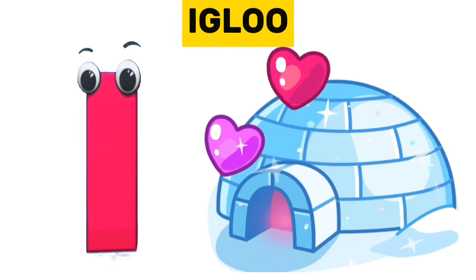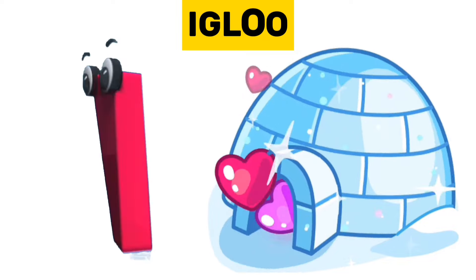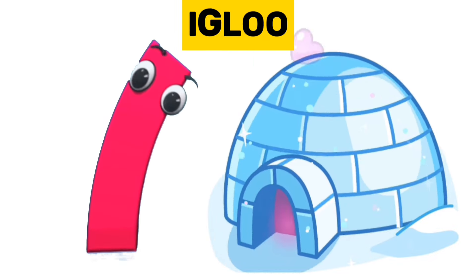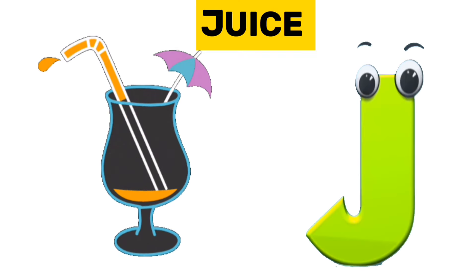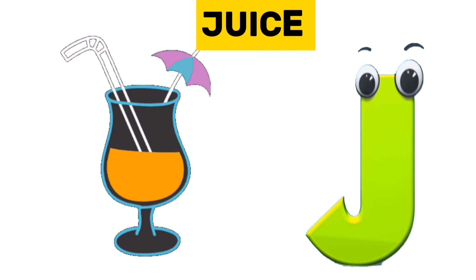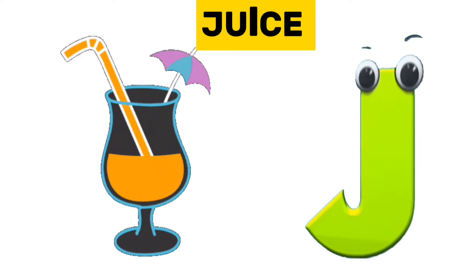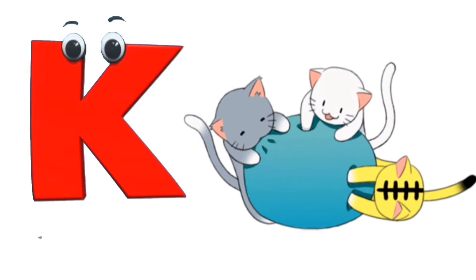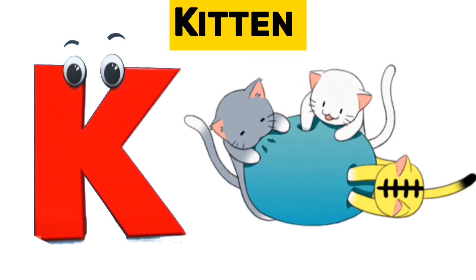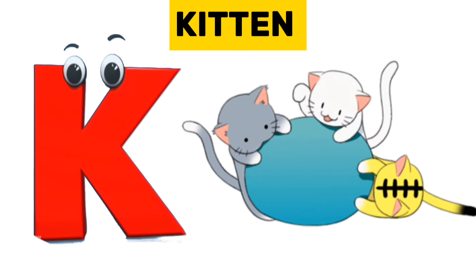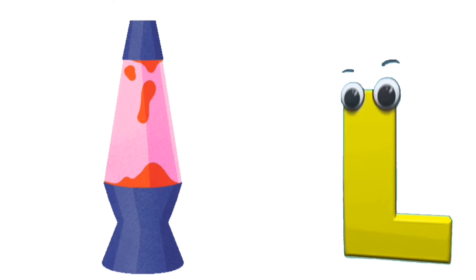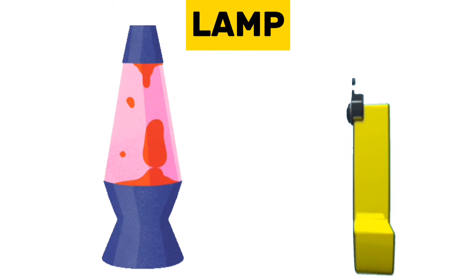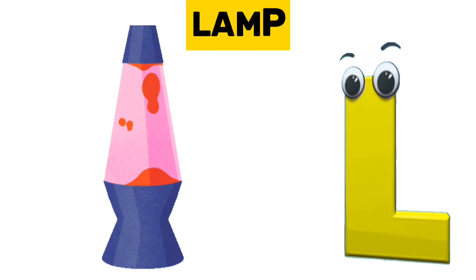I is for igloo. I, igloo. J is for juice. J, juice. K is for kitten. K, kitten. L is for lamp. L, lamp.